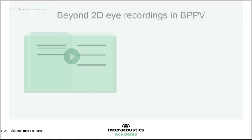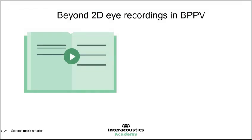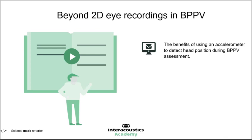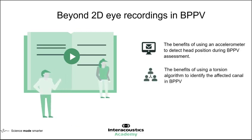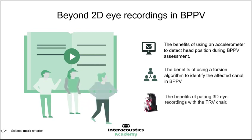Let me quickly recap the objectives for today's webinar. We're going to look at the benefits of using an accelerometer to detect head position during a BPPV assessment, the benefits of a torsional algorithm to identify the affected canal in BPPV, and torsional eye movements in positioning and positional assessments. Finally, we'll look at the benefits of pairing these 3D eye movement recordings with a repositioning chair such as the TRV chair.